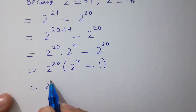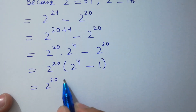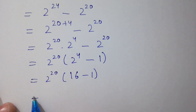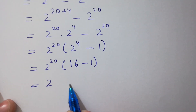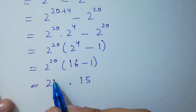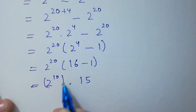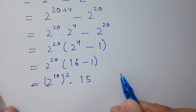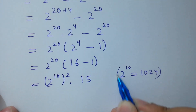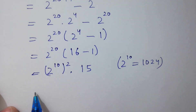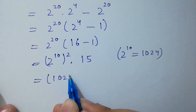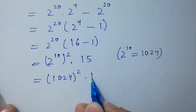2 to the power 20 times 2 to the power 4 minus 1. Since 2 to the power 4 equals 16, we get 16 minus 1 equals 15. And 2 to the power 20 is the same as 2 to the power 10, to the whole power 2, and we know that 2 to the power 10 equals 1024. So here, 2 to the power 10 squared is 1024 to the power 2, times 15.